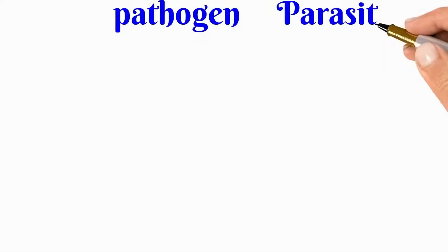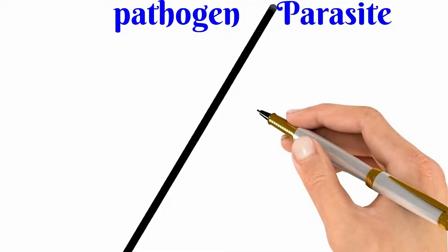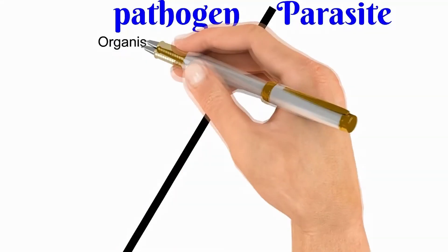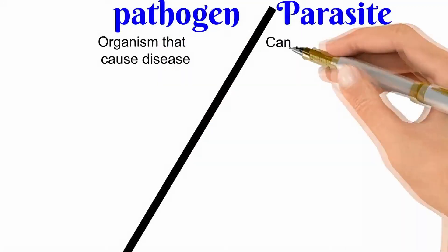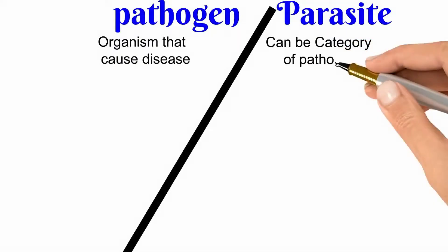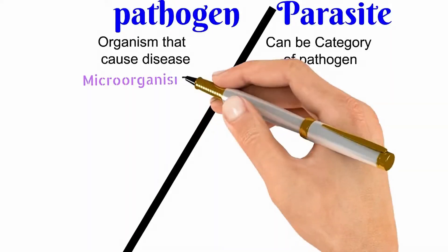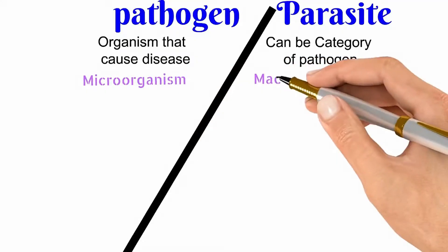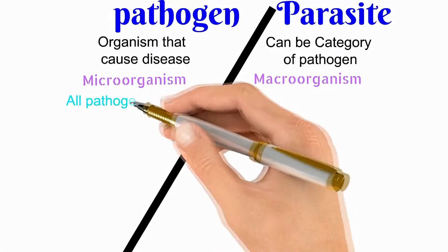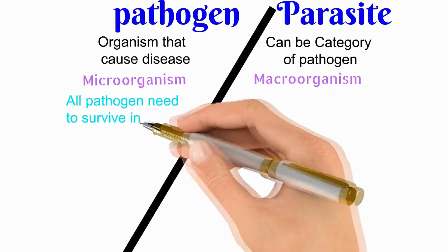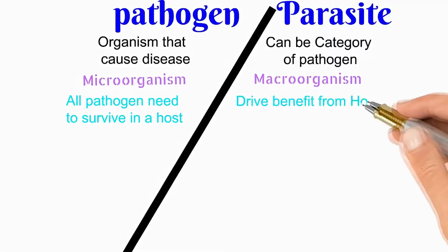Now the difference between the pathogen and the parasite. Basically there is no big difference between these two. Both are organisms and both cause severe diseases in the host. A pathogen is an organism that causes disease. Parasites can be a category of pathogen. Pathogens are microorganisms — single-celled organisms like protozoa. On the other hand, parasites are also microorganisms. All pathogens need to survive in their host, while parasites derive benefit from the host in which they are living.